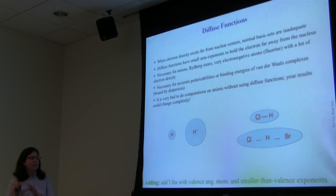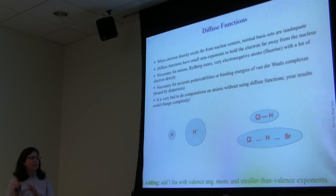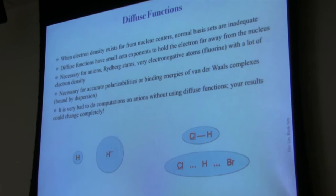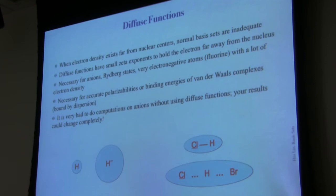We've covered polarization functions; now for diffuse functions. When electron density exists far from the nuclear centers, normal basis sets don't cover that shape. One can add diffuse functions, which have a small zeta and so hold the electron far from the nucleus.